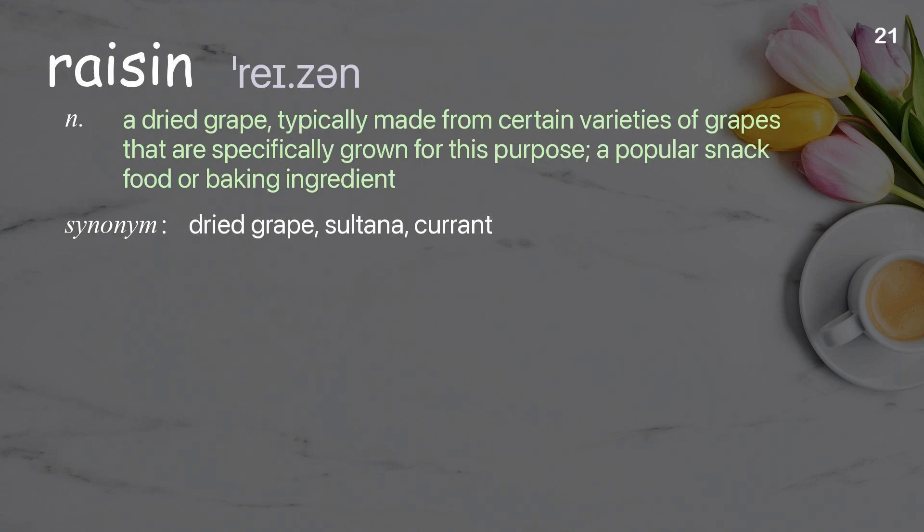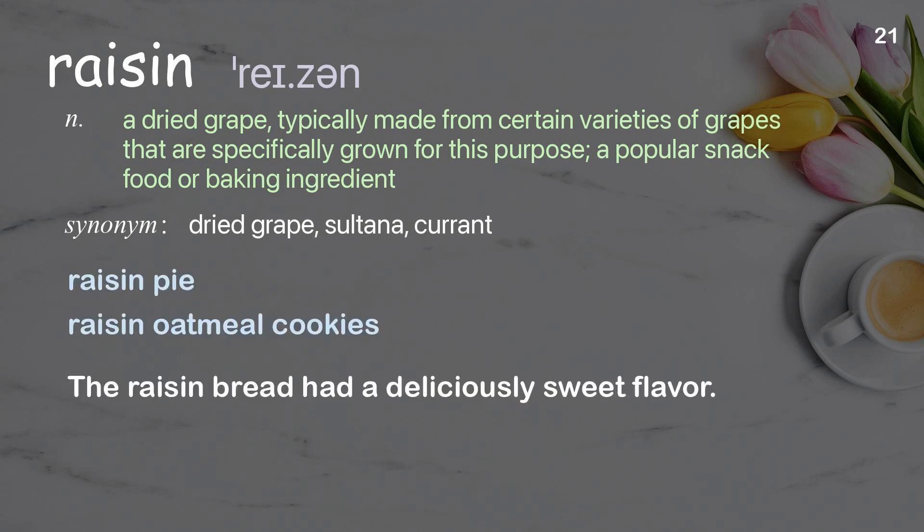Raisin: a dried grape, typically made from certain varieties of grapes that are specifically grown for this purpose; a popular snack food or baking ingredient. Examples: raisin pie, raisin oatmeal cookies. The raisin bread had a deliciously sweet flavor.